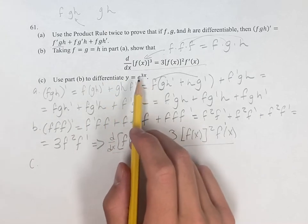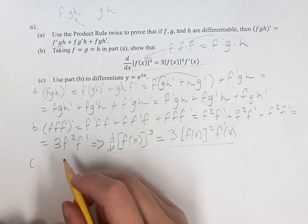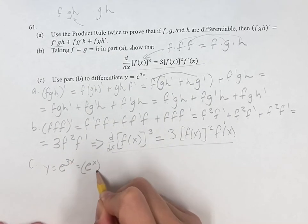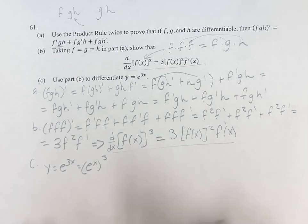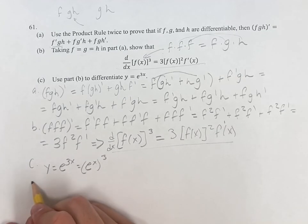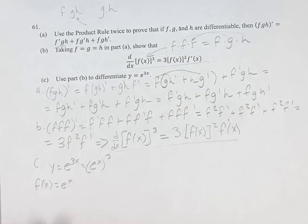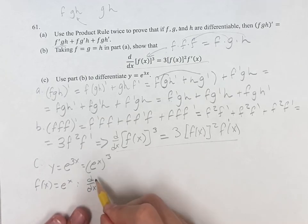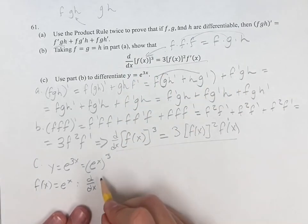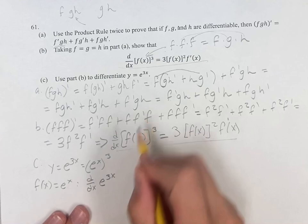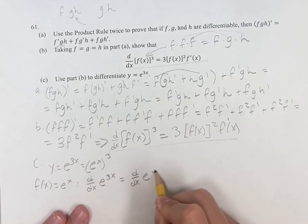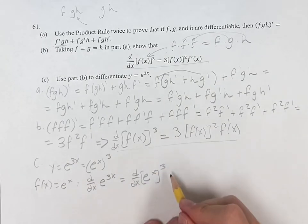And then use part B to differentiate y equals e to the 3x. So y equals e to the 3x is equivalent to e to the x, cubed. This is the same thing as before except e to the x is f of x in this scenario, so f of x equals e to the x. Therefore, the derivative of e to the x cubed — since we're trying to find the derivative of this, the derivative of e to the 3x — I'll keep it in the form given in the original problem — this is the derivative of e to the x, cubed.